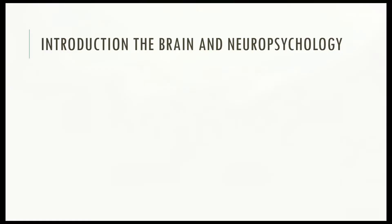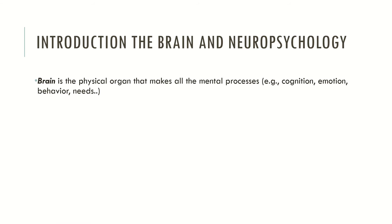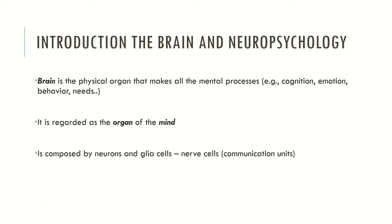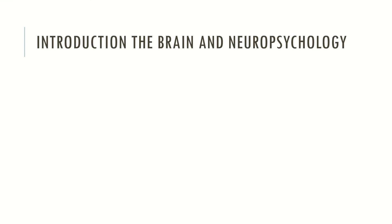So now let's see what the brain is and how neuropsychology and neuroscience regard the brain. The brain is the physical organ that makes all the mental processes available or possible. Mental processes include cognition, emotion, behavior, psychological needs, interpersonal relationships and so forth. Neuropsychology and neuroscience regard the brain as the organ of the mind, and the brain is composed by neurons and glial cells, which are described as the nerve cells and the fundamental unities of the nervous system. The brain has approximately 100 billion neurons and each neuron may connect with around 10,000 other neurons. Neurons are connected by synapses, but we will see this in the future.